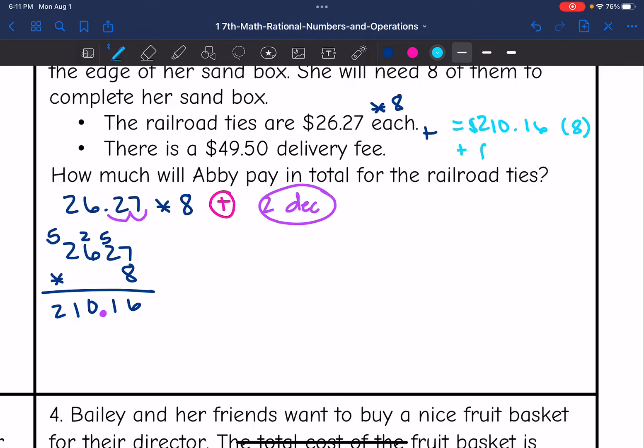Now we are going to add the delivery fee to that. She paid $210.16 for the railroad ties, and we're going to add the $49.50 delivery fee to that. So 6 plus 0 is 6, 1 plus 5 is 6, 0 plus 9 is 9, 1 plus 4 is 5, and I bring down the 2. So in total for the eight railroad ties and the delivery fee, she would pay $259.66.